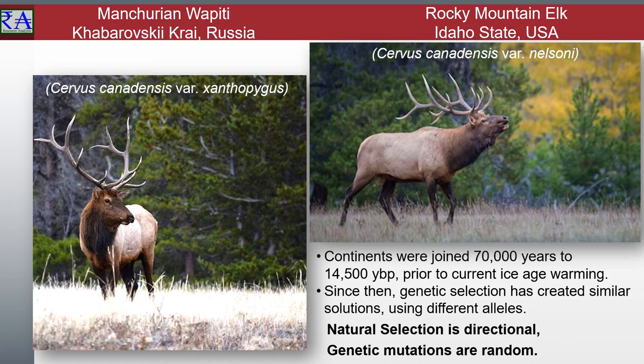Genetic materials were still shared between populations. Both six-point bulls in these photos are about the same structure and build. Genetically, these two subspecies have been separated by 8,550 kilometers — or 5,500 miles — and about 14,500 years.